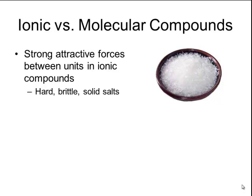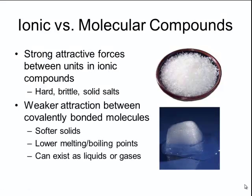These high lattice energies are reflective of the strong attractive forces between the units in an ionic compound. These strong attractive forces are what cause the properties of ionic compounds to be hard, brittle, and solid salts. The ions are held into that fixed crystal lattice structure and are not easily able to move past each other. So if I were to take an ionic compound like table salt and hit it with a hammer, it is not malleable like a metal — it's not going to flatten into a sheet. Instead, that salt crystal is going to shatter into many pieces because you're breaking that fixed lattice arrangement between the ions.